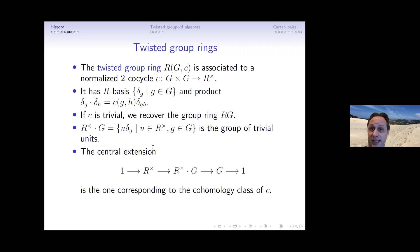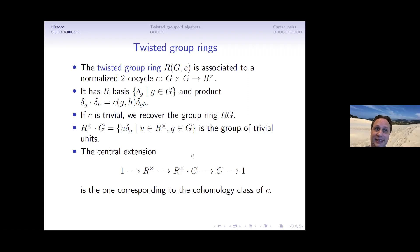A twisted group ring RGc uses a normalized two-cocycle c. We take as an R-basis the elements δ_g and twist the product using the cocycle. Since the cocycle takes values that are units, the δ_g's are units. We have a central extension: the scalars from R are central and invertible, and quotienting out by the units from R recovers the group G. This central extension corresponds exactly to the cohomology class of the two-cocycle.